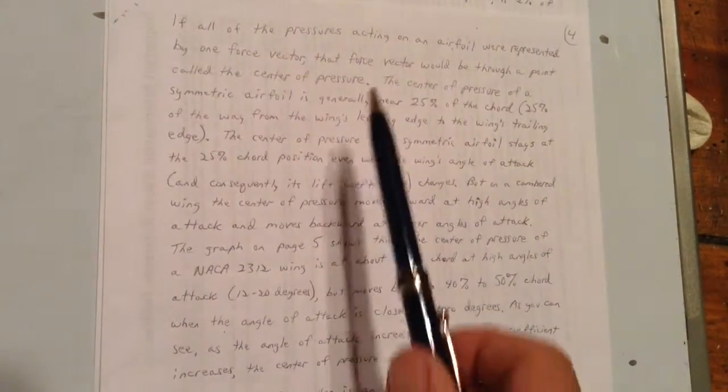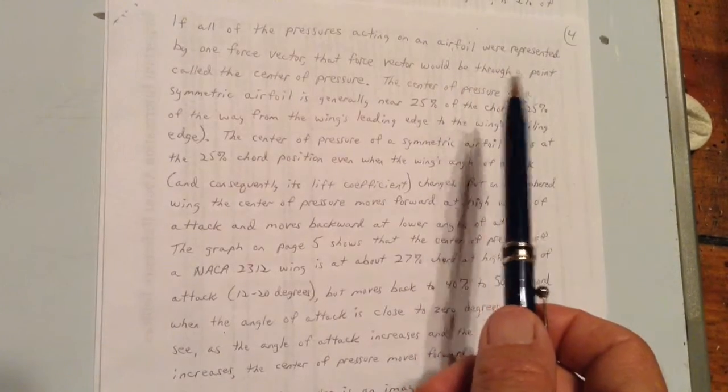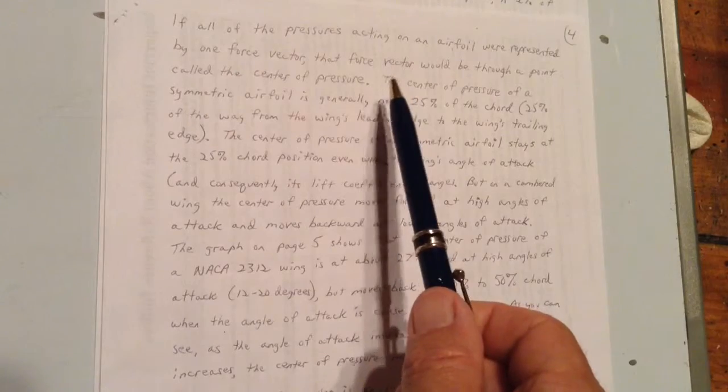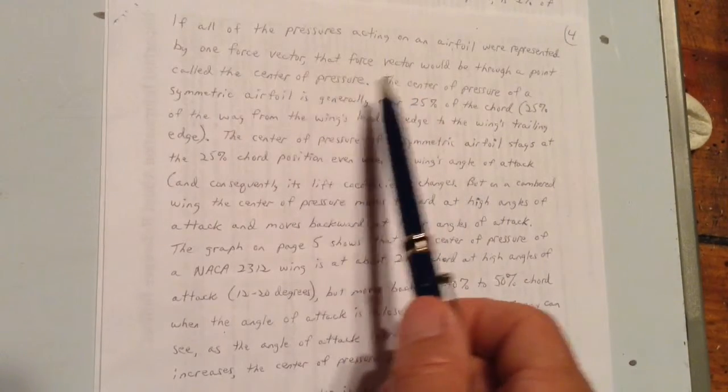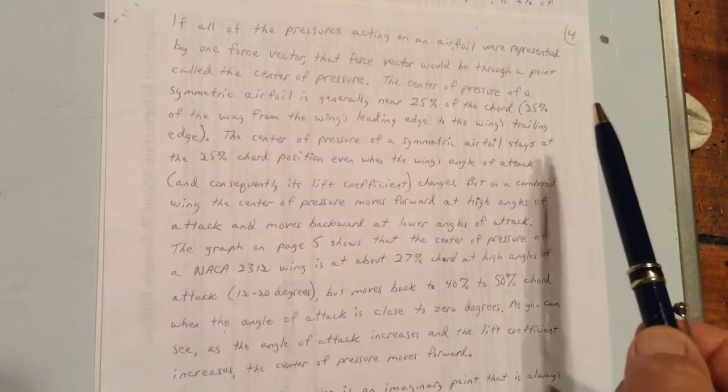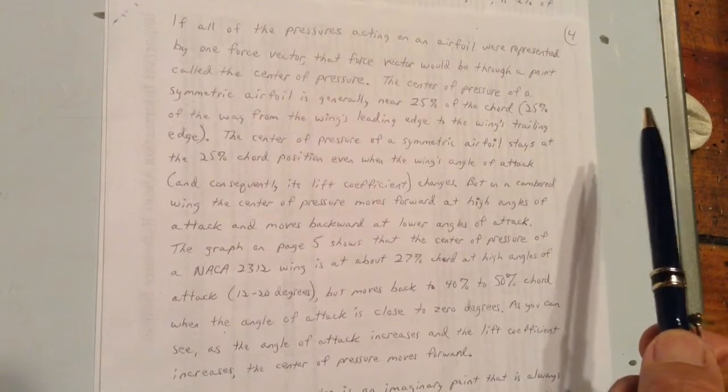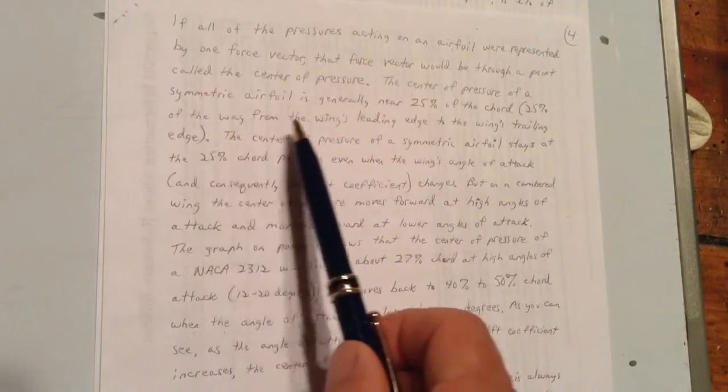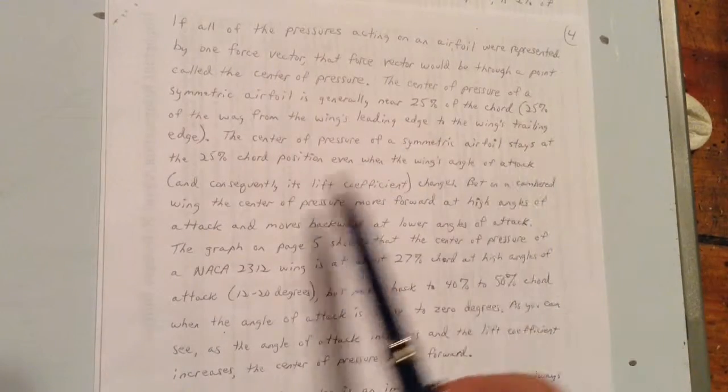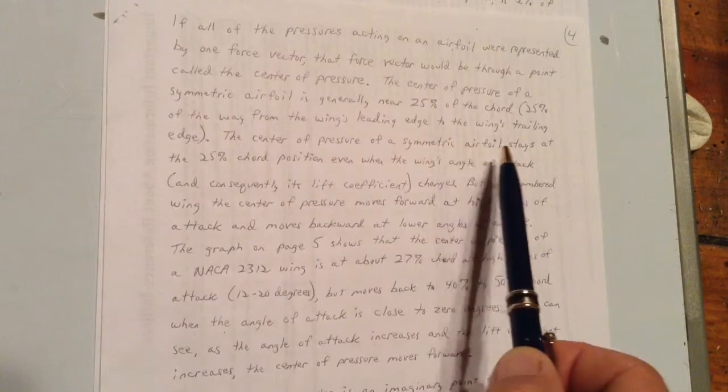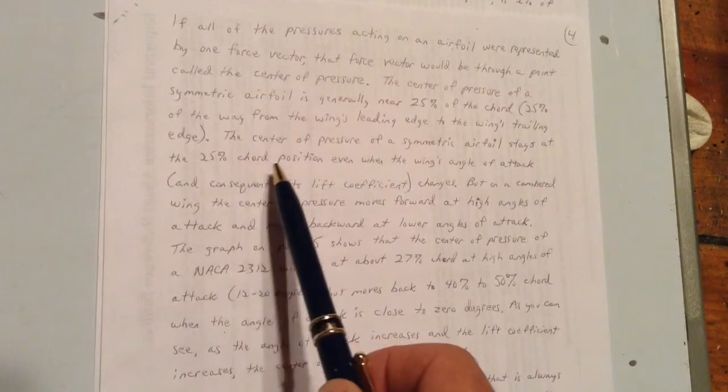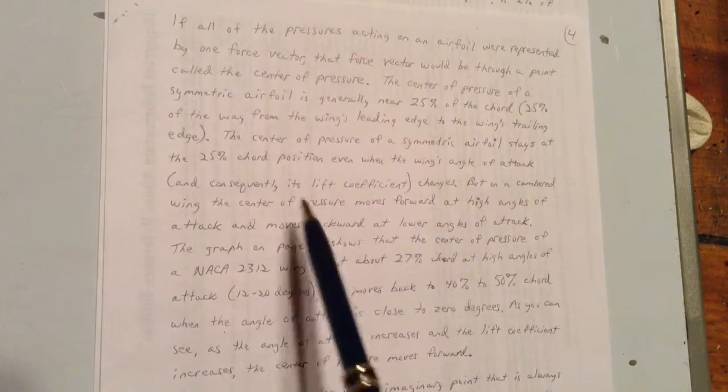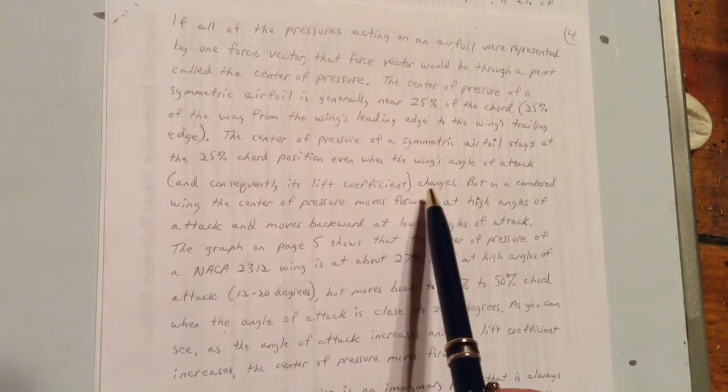If all of the pressures acting on an airfoil were represented by one force vector, that force vector would be through a point called the center of pressure. The center of pressure of a symmetric airfoil is generally near 25% of the cord. That's 25% of the way from the wing's leading edge to the wing's trailing edge. The center of pressure of a symmetric airfoil stays at the 25% cord position, even when the wing's angle of attack, and consequently its lift coefficient, changes.